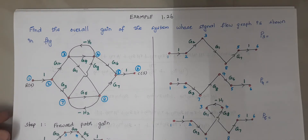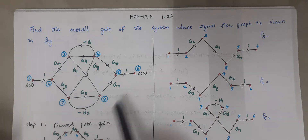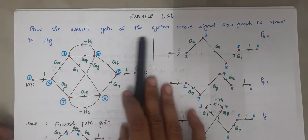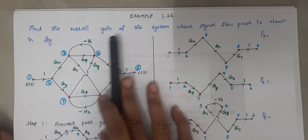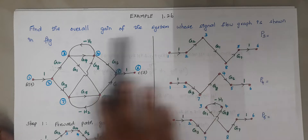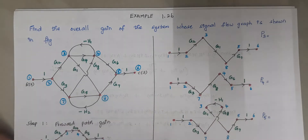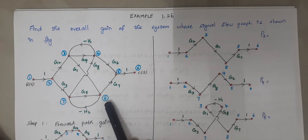Hello viewers, I am Kaushalya. Today we are going to solve another signal flow graph problem. The problem is to find the overall transfer function, that is the overall gain of the system whose signal flow graph is shown in the figure. Our first step is to calculate the forward path gain.